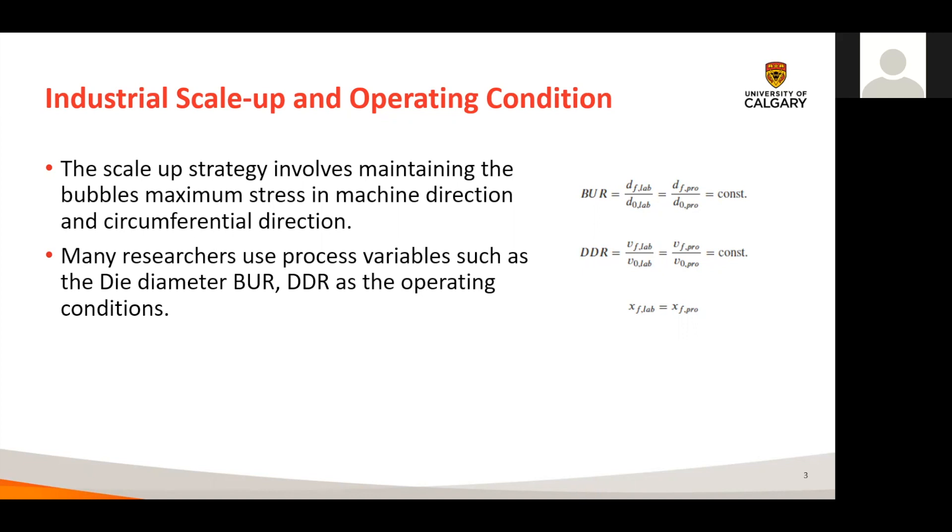In addition, from literature review, many researchers also use these process variables such as the die diameter, BUR, DDR as part of the operating conditions, since the technique of blown film extrusion has been used for large range scales of production.